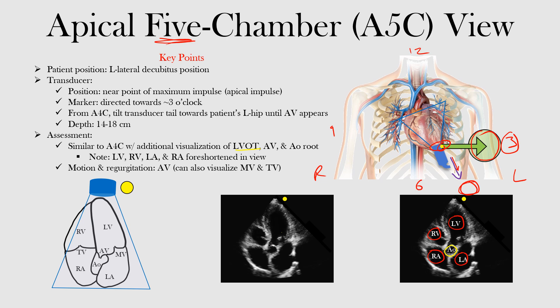If we were to label these: the left ventricle is the one closest to the transducer — the transducer is right here at the top, shown in blue, with the marker in yellow. So we're seeing the left ventricle, then the right ventricle, the right atrium, the left atrium, and in the center, the aorta and the aortic valve.